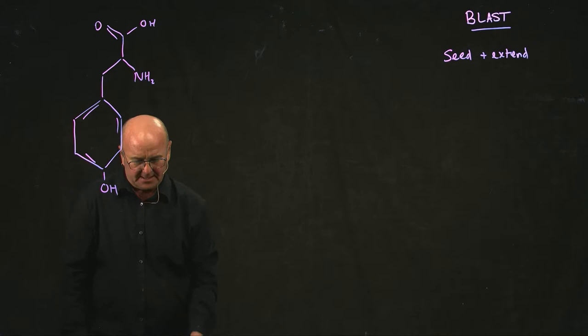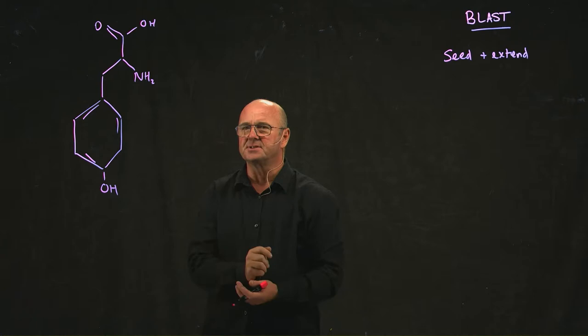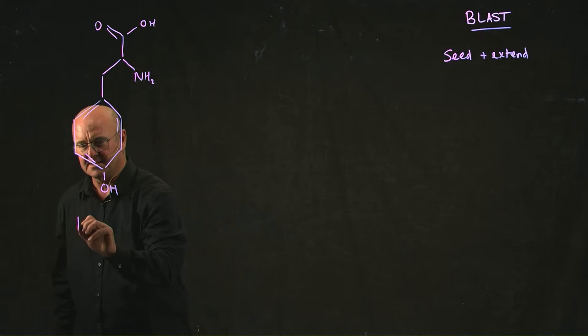So here's an amino acid. This is a structure of an amino acid. I do not expect you to learn the structures of amino acids. If you want to know the structure, just google structure of. In this case, it's tyrosine. So there's one amino acid.